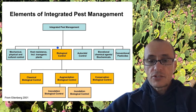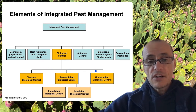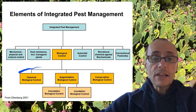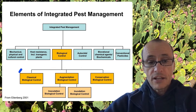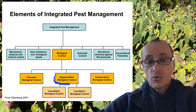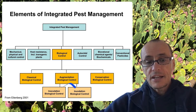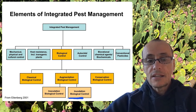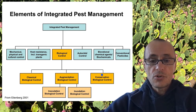Within biological control, there are different categories of how it is actually practiced. We've already talked a little bit about classical biological control, or importation biological control. There is augmentation biological control, which has two categories — inoculation and inundation biocontrol. And then there's conservation biological control.